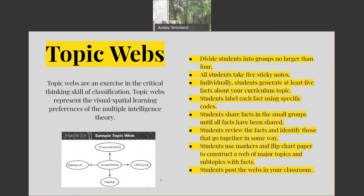Ask all students to take five sticky notes. Individually, students will generate a list of at least five facts about your curriculum topic. Students label each fact using a specific code. Students share those facts in small groups until all facts have been shared. Students review the facts and identify those that go together in some way — classifying those. Then use markers and flip chart paper to construct a web of major topics and subtopics with facts, and then ask your students to post those webs in your classroom.